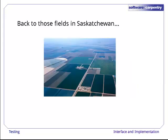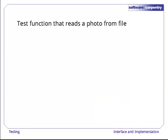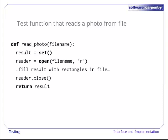Let's go back to our photographs of fields in Saskatchewan. We want to test a function that reads a photo from a file. Remember that a photo is just a set of rectangles. Here's a plausible outline of the function. It creates a set to hold the rectangles making up the photo, opens a file, and then reads rectangles from the file and puts them in the set. When the input is exhausted, the function closes the file and returns the set.